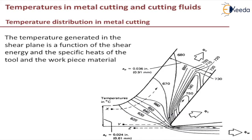In the previous video we have seen how heat generation happens inside the metal, which will help you understand how temperature distribution is happening. Wherever heat generation is happening, the temperature will rise immediately to a higher value. Let us assume a point X in the material as shown in the figure.